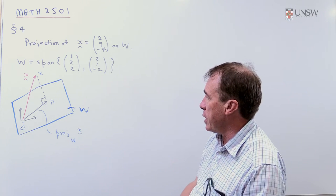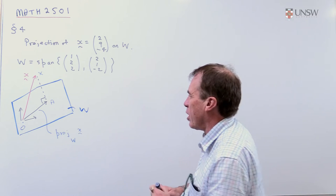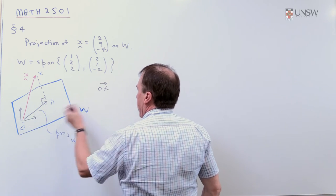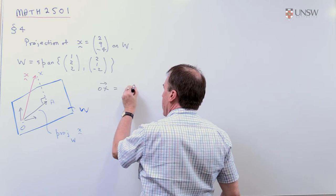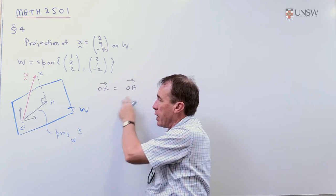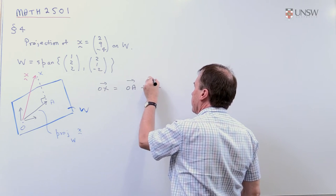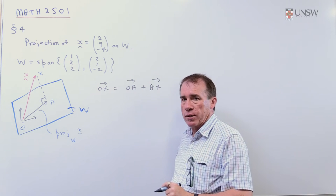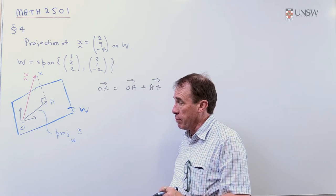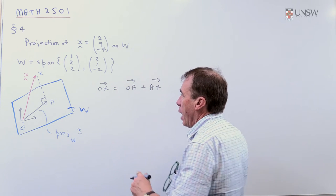Now what I do with this is I just stare at the picture for a bit and say, well look, I can write the vector OX, that's the vector X that I'm given. I can write that as OA, that's what I want to get my hands on, that's the projection, plus the vector AX. Now ultimately I don't really care too much about AX, so I'm going to leave AX as it is.